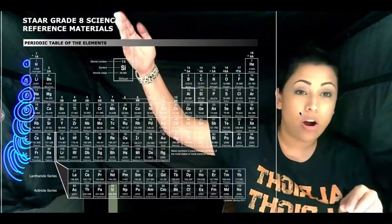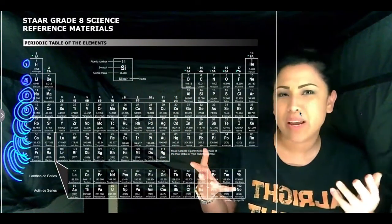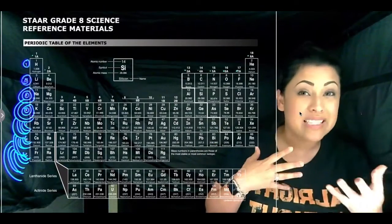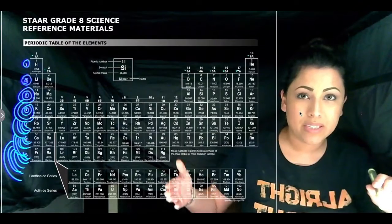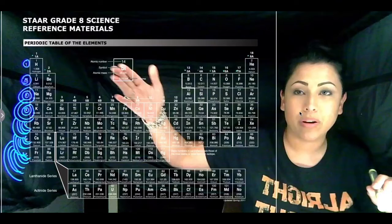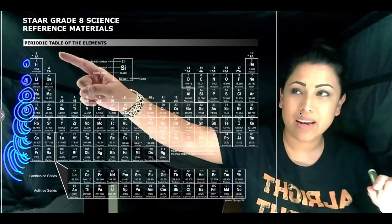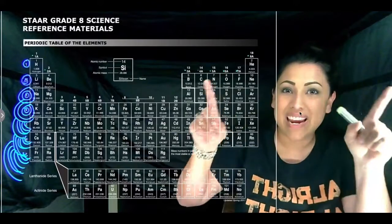Now what about our columns or our groups? We also call those families because they kind of react similarly. So these are our groups and those actually tell us the numbers at the top. The first number is the group number. So group one and then the number under that, the A number, tells us the number of valence electrons.